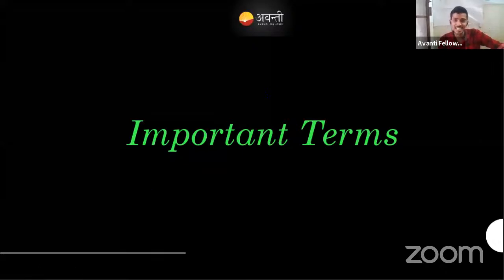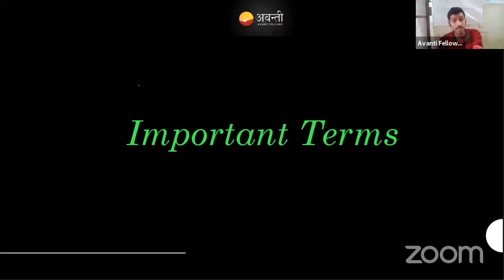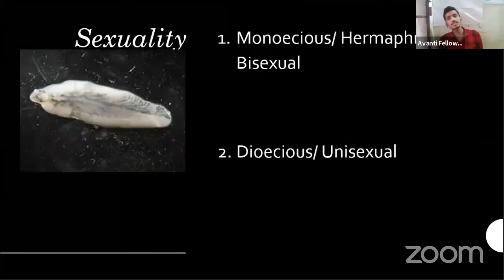These important terms are really important — not directly asked in exams sometimes, but mainly important for understanding. These are going to be tested. Let's go over the next important terms. First is sexuality: monoecious, hermaphrodite, and bisexual — when it comes to zoology, we consider all three terms as the same.